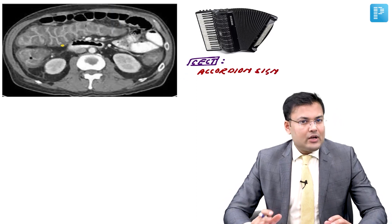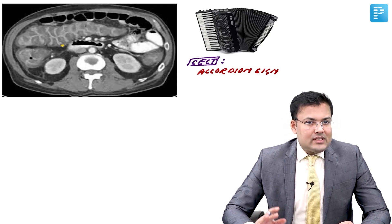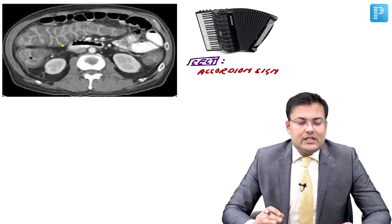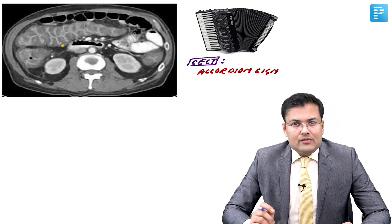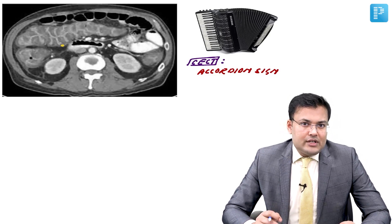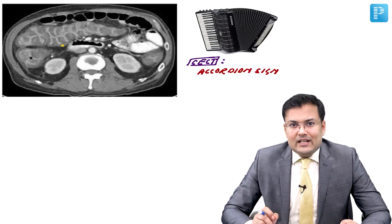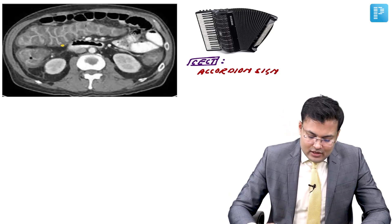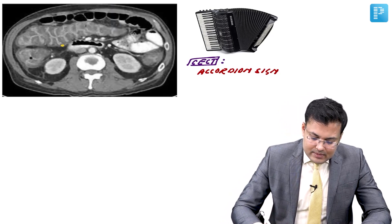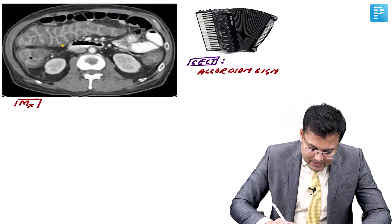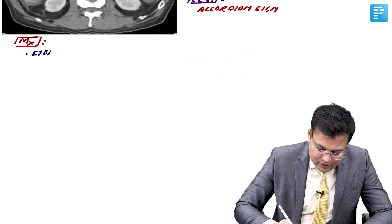For treatment, since the pathogenesis involves antibiotics causing depletion of commensal flora with overgrowth of Clostridium difficile, the first step is to immediately stop the offending antibiotic.